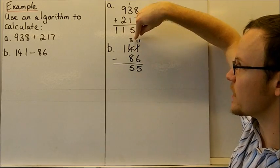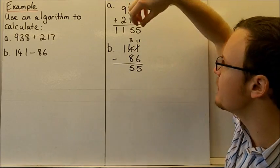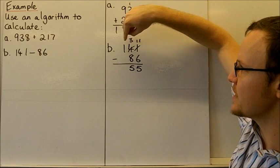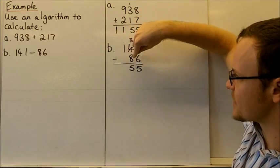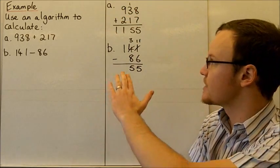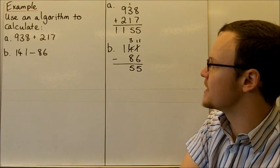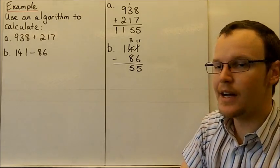And then because we've taken the 1 away from that tens, it's become 3, so that's now 13 in the hundreds and tens column. So 13 minus 8 is 5. So the answer for 141 minus 86 is 55.